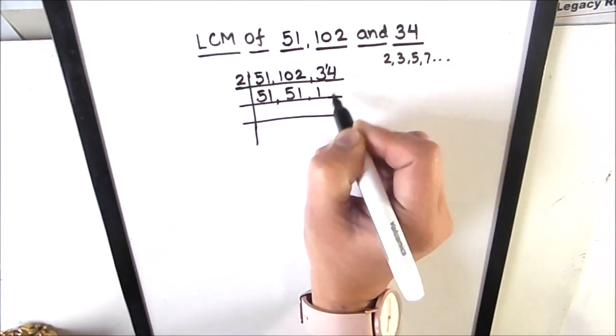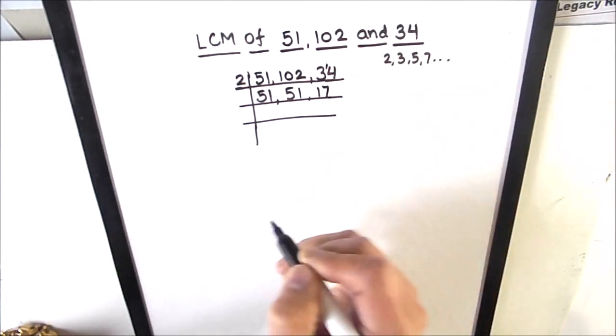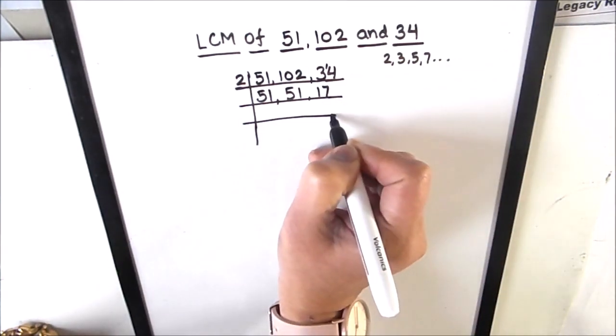Now 17 is a prime number, it is only divisible by number 17.